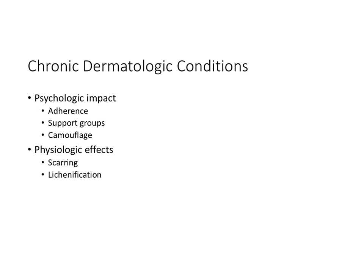For people with chronic dermatologic conditions — like vitiligo or a large port wine stain — there can be a significant psychological impact that affects adherence to treatment. It can be helpful to have support groups with people who really understand what you're going through. Camouflage — basically makeup — includes great products that can help cover up lesions or scars from things like acne, using skincare products that are kind to the skin. Physiologically, scarring and lichenification can occur, so we want to teach people how to keep their skin moist and well hydrated.